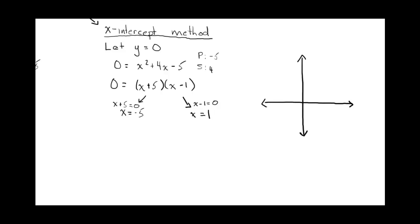So we'll very roughly plot these points. So at 1, we have an x-intercept. This will be negative 5. We have another x-intercept.